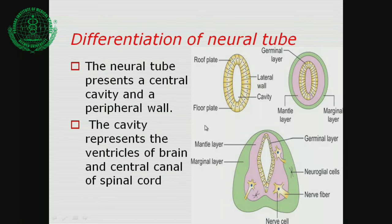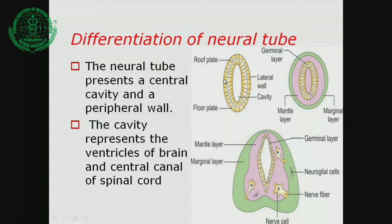The neural tube consists of a central cavity and a peripheral wall, divided into three layers. The central cavity eventually terminates into the ventricles of the brain, while the entire wall gives rise to the whole brain. The roof plate, floor plate, and lateral walls all contribute to brain development, giving rise to the cerebral hemispheres, diencephalon, metencephalon, myelencephalon, and related structures.